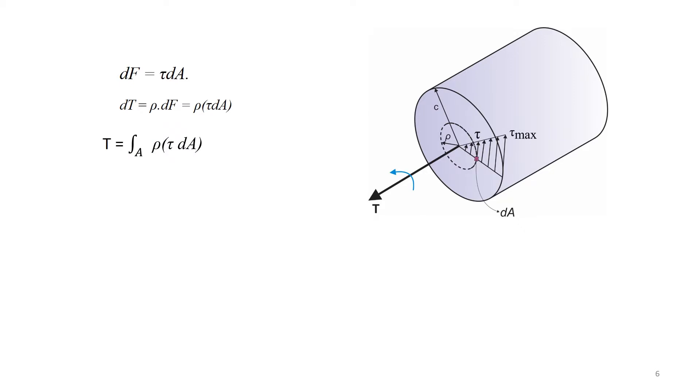However, using the proportionality of triangles, we can recognize that tau equals rho by the radius of the shaft times tau max. Therefore, combining the equation, we get this. The integral term now depends only on the geometry of the shaft.